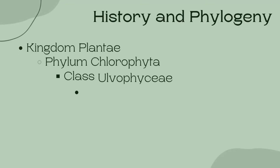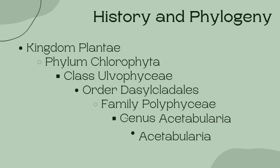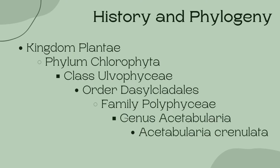In this slide, we can see the phylogeny and the classifications of Acetabularia creniolata. This species is a member of Kingdom Plantae, Phylum Chlorophyta, Class Ulvophyceae, Order Dacilcladales, Family Polyphyceae, and Genus Acetabularia.